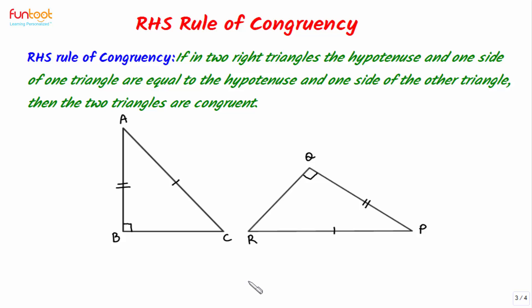Let's understand the statement of RHS rule of congruency with the help of this figure. Here we have two right angle triangles — triangle ABC and right triangle PQR. For these two triangles to be congruent by RHS rule, the necessary conditions are: both triangles should be right angle triangles. And here we can see that both triangles are right angle triangles.